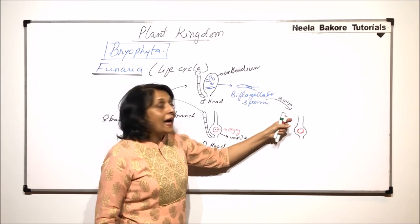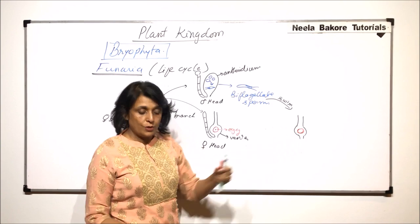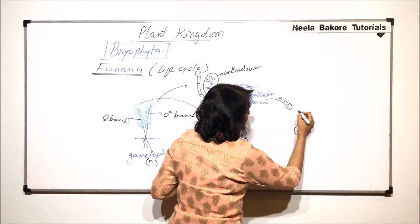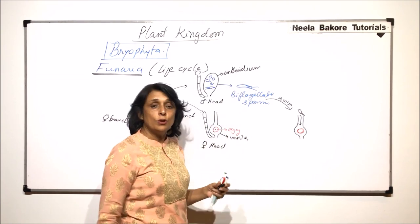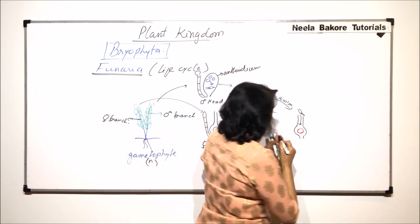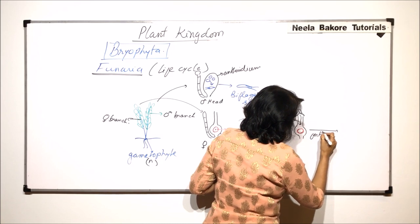Its path is lubricated by those canal cells which are here. So the sperm which is biflagellate is going to enter up to the egg. Now in the venter fertilization takes place.